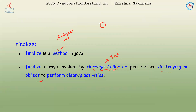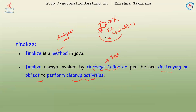Garbage collection uses the finalize method to destroy unused objects. When objects are created in a Java program but are no longer referenced or used, the garbage collector finds these objects and destroys them, performing cleanup activities by calling the finalize method.